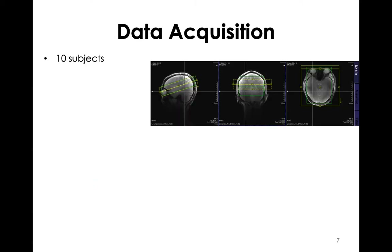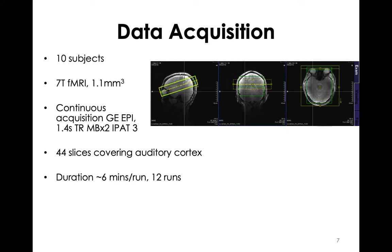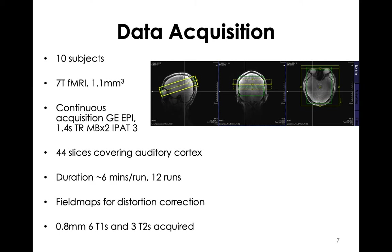We had 10 right-handed normal hearing subjects. Data were acquired at 7T at a resolution of about 1mm, using a continuous acquisition sequence. The slices were angled along the sylvian fissure to get coverage of the auditory cortices. Each run was about 6 minutes long and there were 12 runs. We acquired several field maps for distortion correction, and also collected 6 T1s and 3 T2s for segmentation, cortical reconstruction, and myelin mapping, which helped inform our regions of interest.